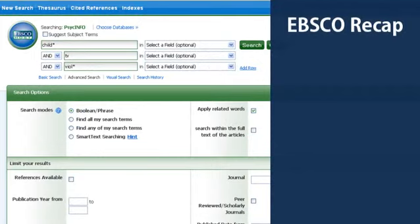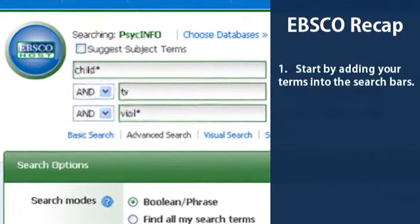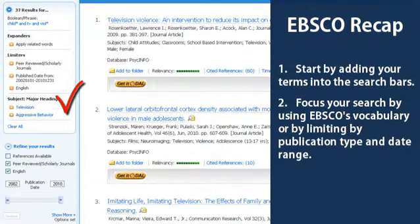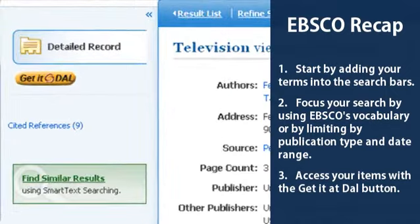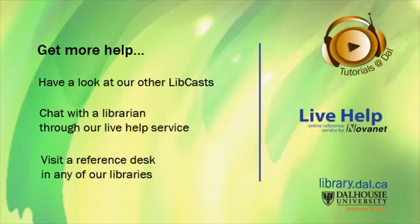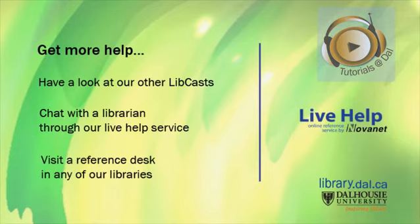Let's review some of the things we've covered in this tutorial. Start by adding your search terms into the search bars at the top of the page. Focus your search by using EBSCO's vocabulary or by limiting your publication types and date ranges. Click the Get It At Dal button to access items that interest you. This tutorial introduced you to search basics with an EBSCO database. For more research assistance, visit a librarian at any of our reference desks, chat with us on LiveHelp on the library homepage, or check out more of our tutorials.